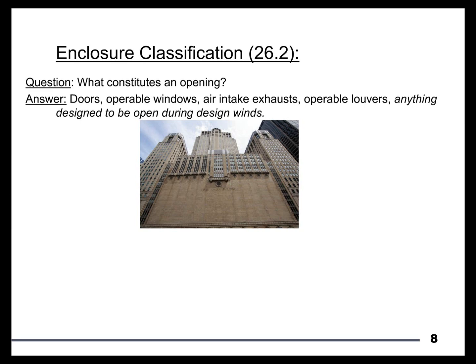This is where, if you look across the country, you'll find a geographic split in interpretation. In hurricane zones, it's easier to accept that openings will be closed, since we have advance notice of a hurricane event. Outside of hurricane zones, it's much harder to convince yourself that windows will be shuttered during a design wind event.